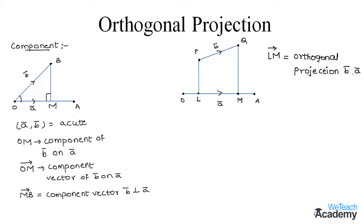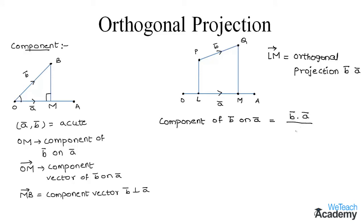Note that the orthogonal projection of vector B bar on A bar is equal to the component vector of B bar on A bar. Now let us learn a few more formulas based on the same concept. The component or projection of B bar on A bar is given by (B bar · A bar) divided by mod A bar.